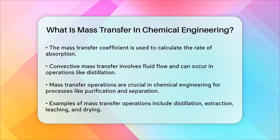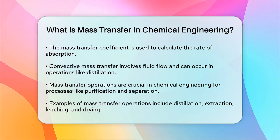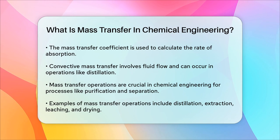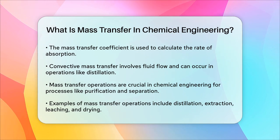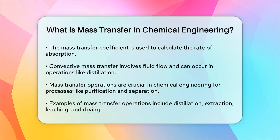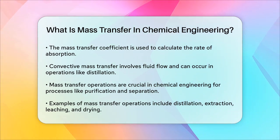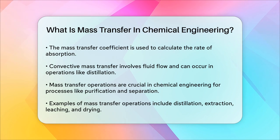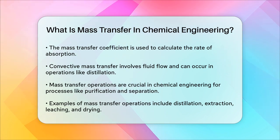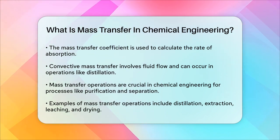In summary, mass transfer in chemical engineering is about understanding how substances move between different phases or within the same phase, driven by differences in chemical potential. It's a fundamental concept that underpins many critical processes in the field.